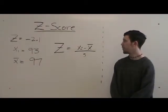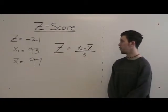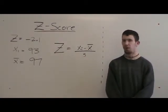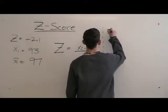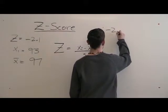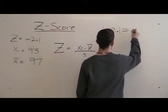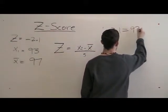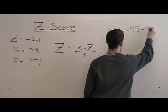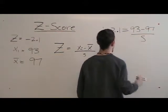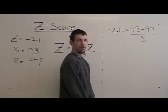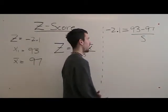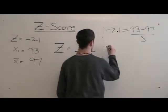In this second example, the z-score is negative 2.1, the xi is 93, and the x-bar is 97. First thing you do is multiply negative 2.1 times s, which is negative 2.1s.